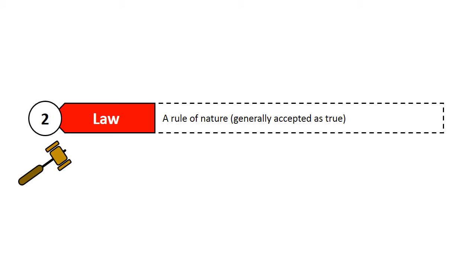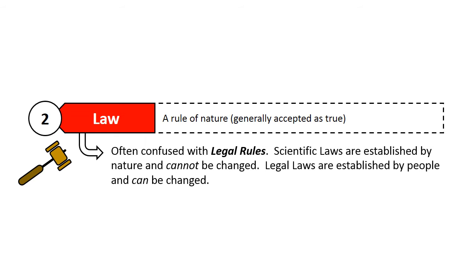In science, we also have laws. And a law is just some rule of nature that we have sort of discovered. We didn't write the law. Nature made it up. Now this is often confused with legal rules. So in scientific laws, we cannot change them. Nature made them, and they are the way they are.